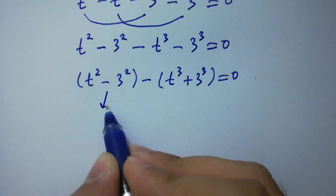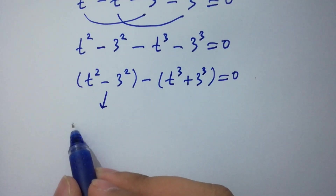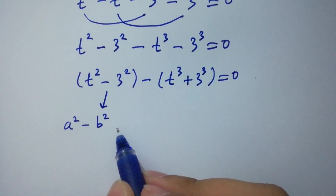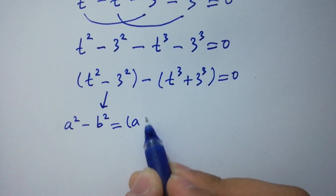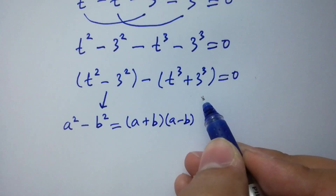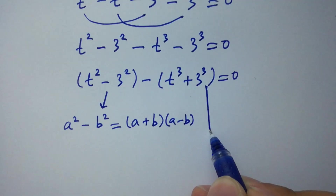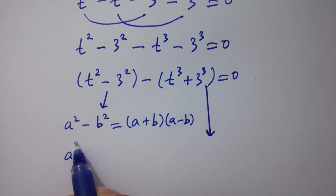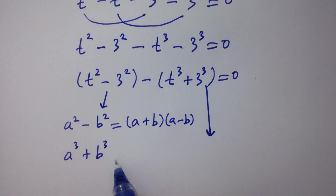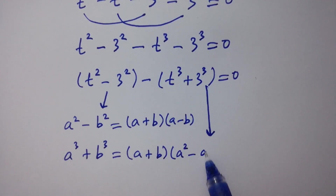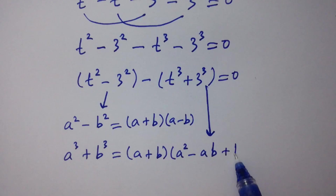We know the formula a-squared minus b-squared equals a plus b times a minus b. And we know the formula a-cubed plus b-cubed equals a plus b times a-squared minus ab plus b-squared.